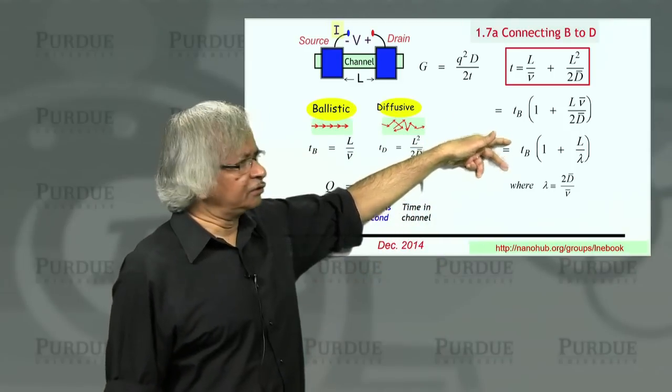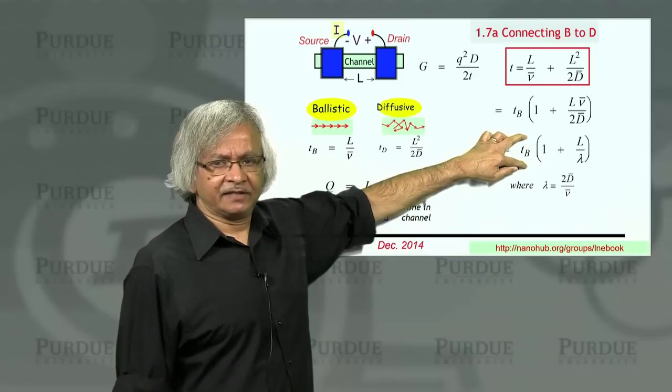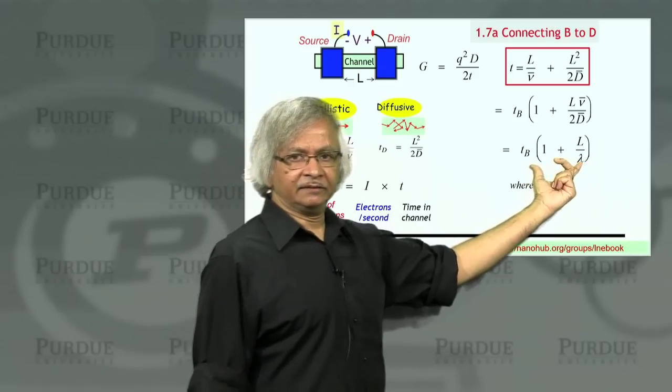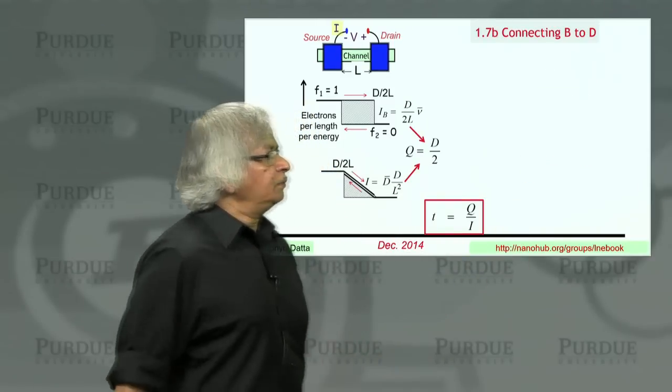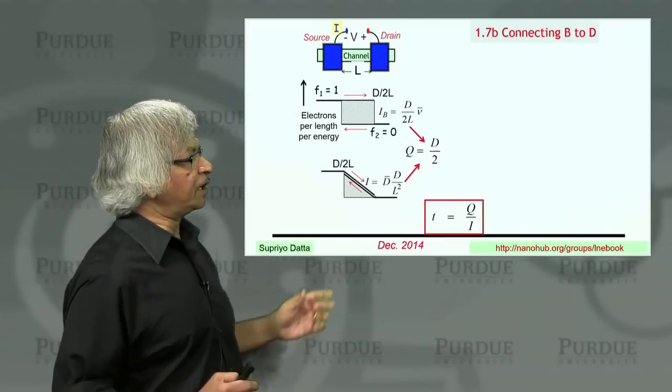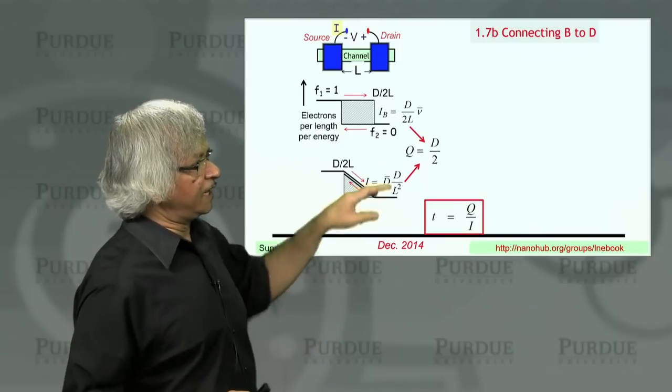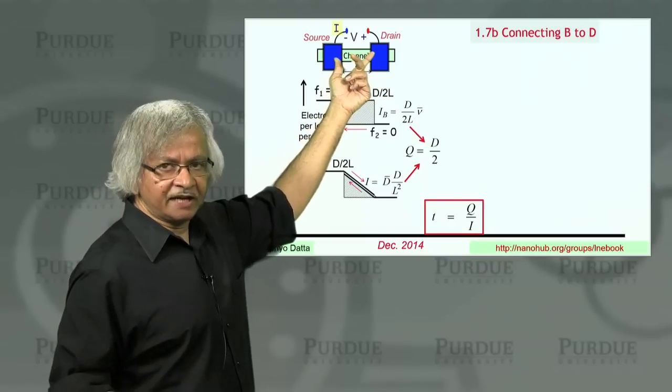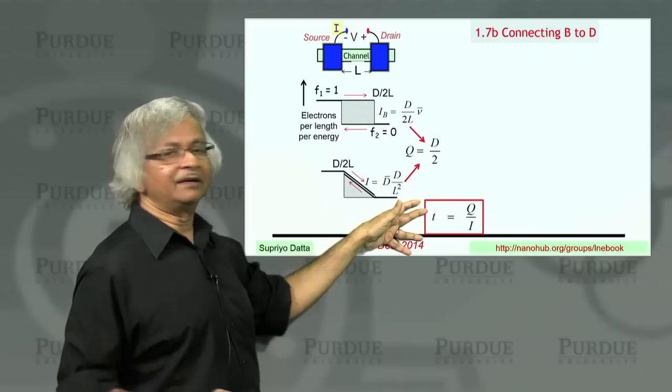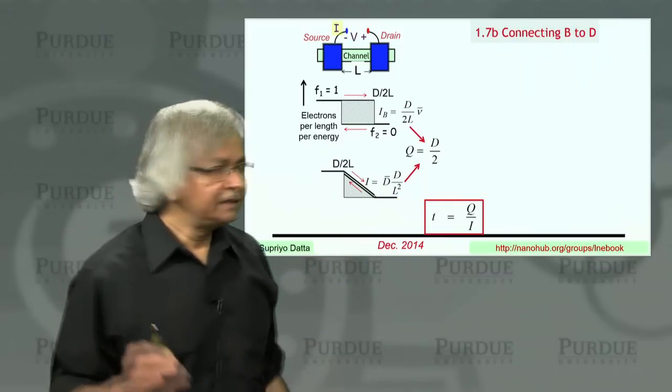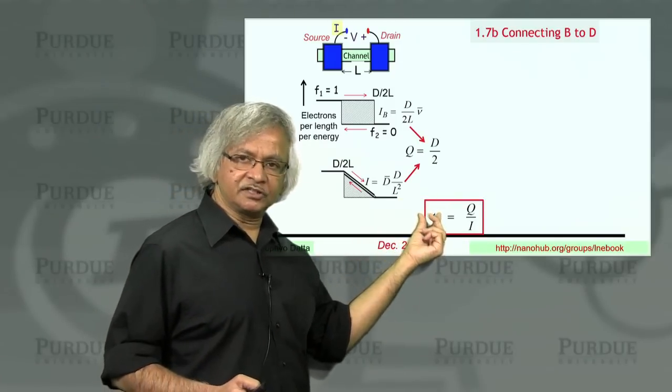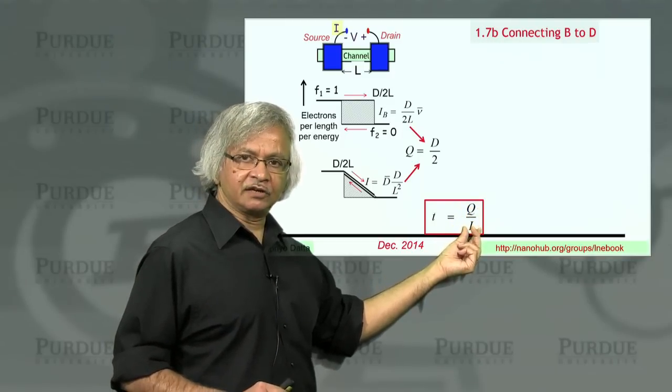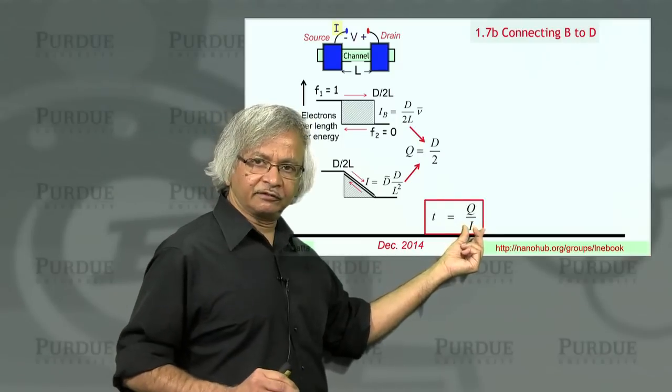Let me say a little more to justify why we might expect this, why the transfer time should be given by the ballistic time times this 1 plus L over lambda. What we did in the last lecture, when I was trying to justify this diffusive time, we said let's look at the electrons in the channel and relate it to the flux. A fundamental relation is that the average time an electron spends in the channel is equal to the number of electrons in the channel at steady state divided by the flux of electrons, the current.